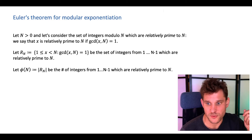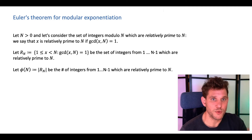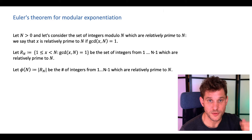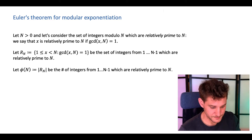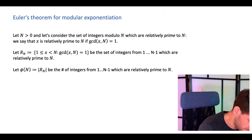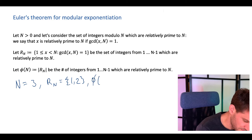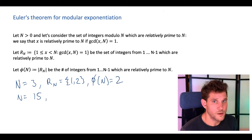We'll call phi of n the size of R sub n — that's the number of integers from 1 to n minus 1 that are relatively prime to n. Here's a simple example: if n equals 3, then R sub n equals just the set {1, 2}, and therefore phi of n equals 2.